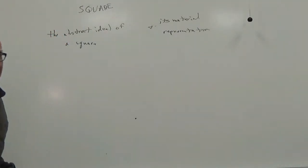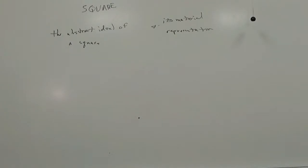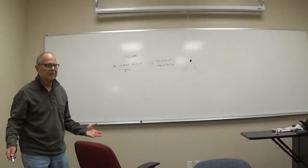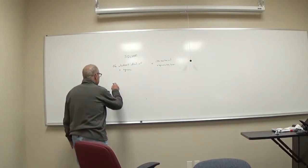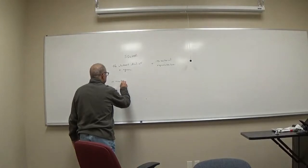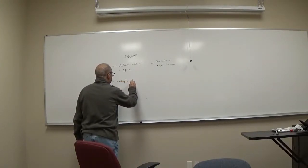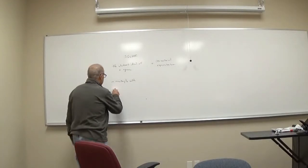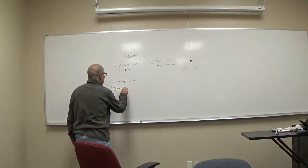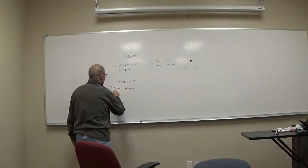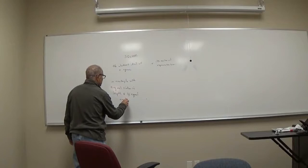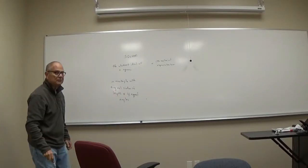An abstract ideal is like a definition or standard. So what would be a good definition of a square? It's a rectangle with four equal sides in length and four equal angles. So there's the abstract ideal — it's a universal definition.